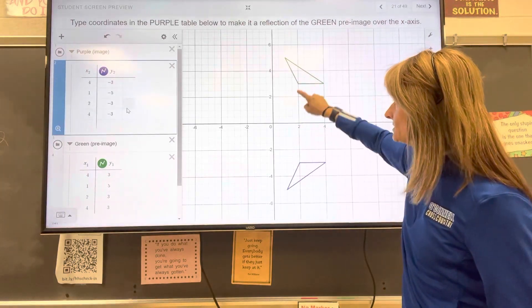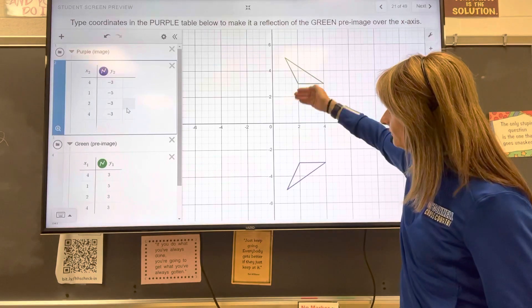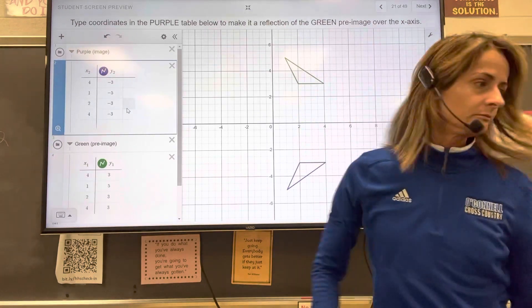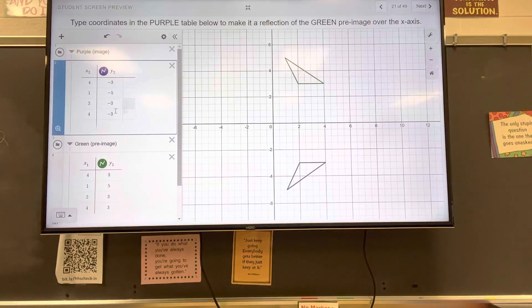I usually don't go through all this when I'm drawing a reflection. What I usually do is count how far away a point is from whatever line I'm reflecting over. So for example, that point is 3 away from the line. So when I reflect it, it should also be 3 away from that line. And that is slide number 21.